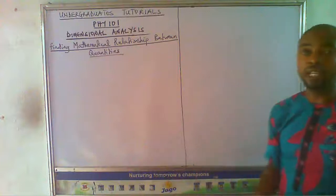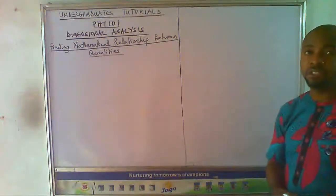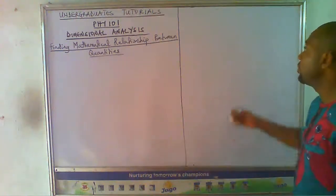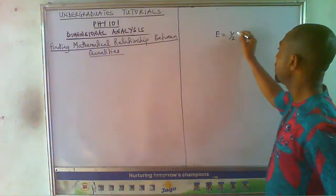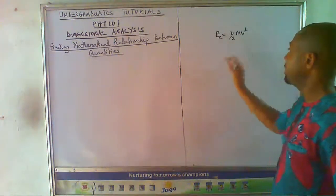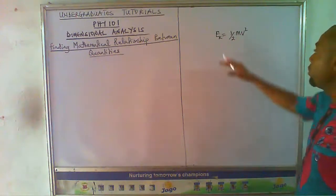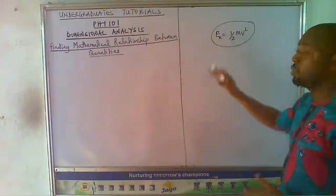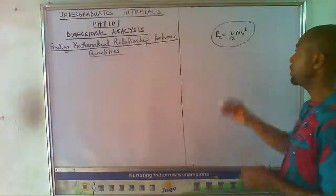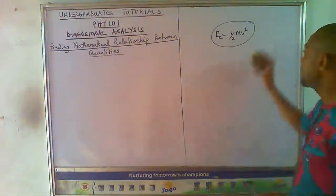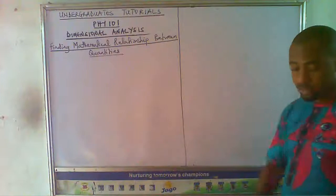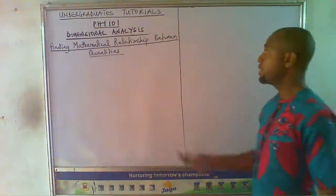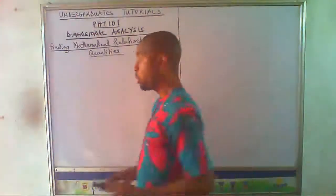There are so many mathematical expressions or formulas that connect different quantities. For example, we say that kinetic energy is half mv squared. We can use dimensional analysis to actually establish this. Dimensional analysis can be used to establish expressions like this, and that's what our business will be in this particular class. So how do we use the principle of dimensional analysis in establishing mathematical relationships between quantities?